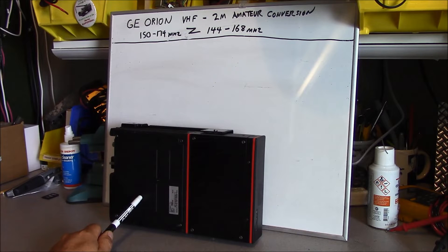The UHF variant was already operating in the 440-470 MHz range, so it didn't require any conversion. The VHF, however, is a 150-174 MHz range and we're going to need to do some work to the radio in order to get it into the 2 meter amateur band.